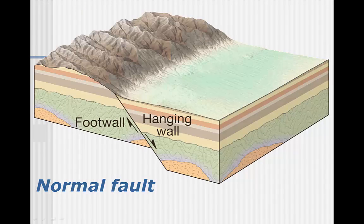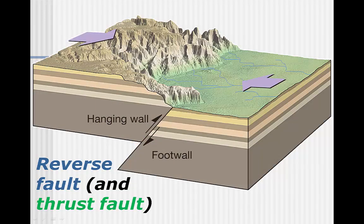In a normal dip-slip fault, the hanging wall moves down. This is the result of tensional stress, or the absence of stress that allows the hanging wall to slide down the fault due to gravity. Reverse dip-slip faults form when the hanging wall moves up. This can only happen with extreme compressional stress, such as during mountain building. If the fault is at a low angle from horizontal, it is more specifically called a thrust fault.